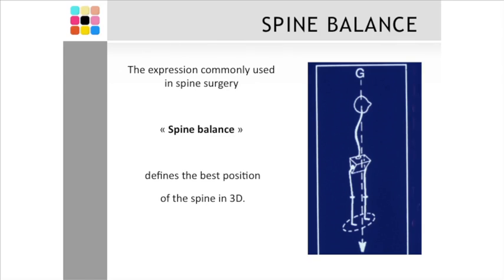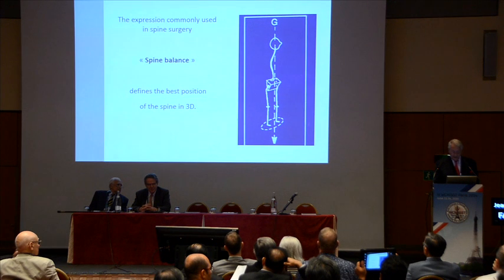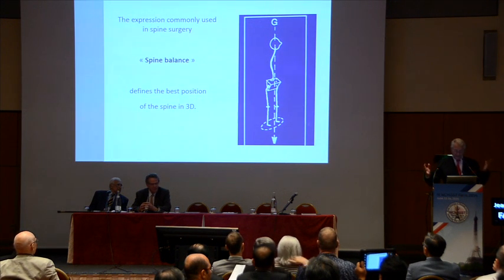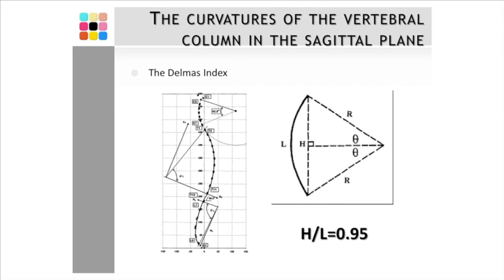This diagram on the right has been used by Professor Jean Dubousset to explain how the spine must be in balance. And spine balance has become a word which has been used, and I would say perhaps a little bit abused, with regard to the human body.